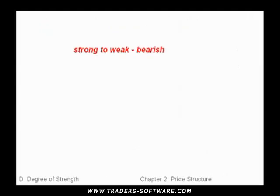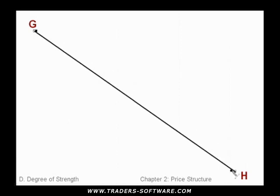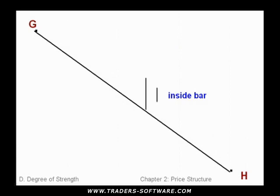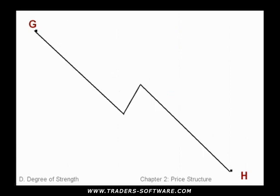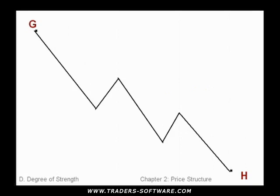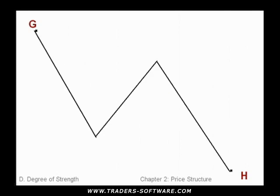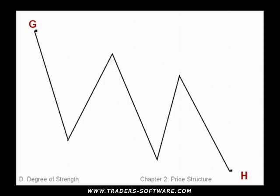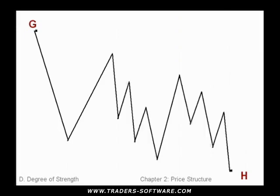In the bearish scenario, the strongest move is the bar-to-bar move, followed by bar-to-bar with an inside or outside bar, then a measured move with a shallow retracement, then two measured moves back-to-back with shallow retracements, then a single measured move with a deep retracement, then two measured moves with deep retracements, and finally CD moves broken down into measured moves as well — going from strongest to weakest downward.